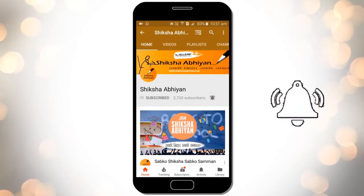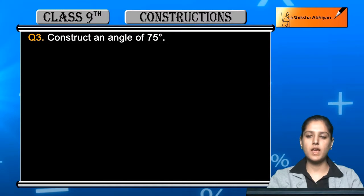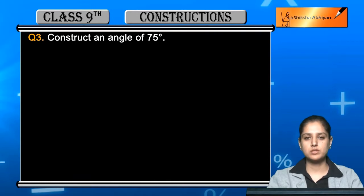Question number three is construct an angle of 75 degrees. Let us begin with the steps of construction.